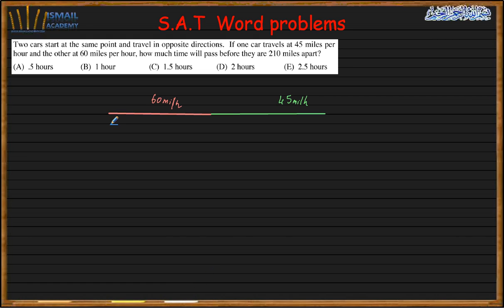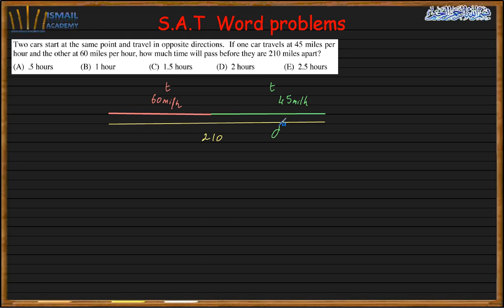That means the time elapsed before they become 210 miles apart. Since they start at the same time, the time T is the same for both. The distances traveled are different because their velocities are different — car A travels d1 and car B travels d2. But we know that d1 plus d2 equals 210.